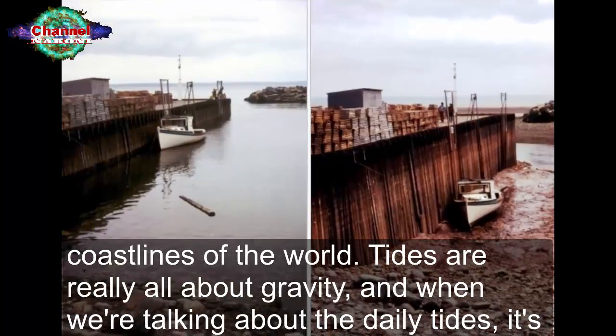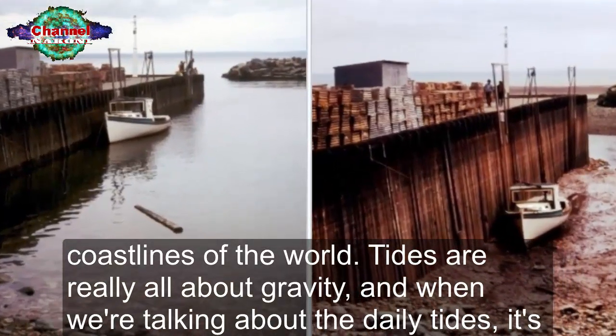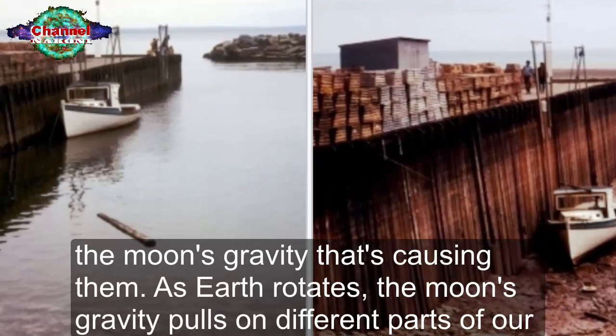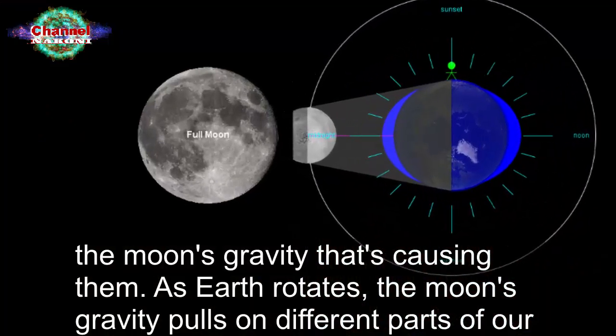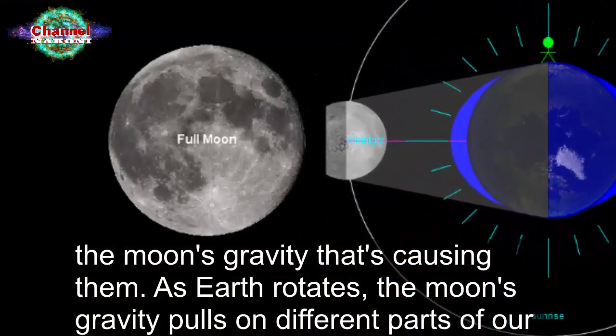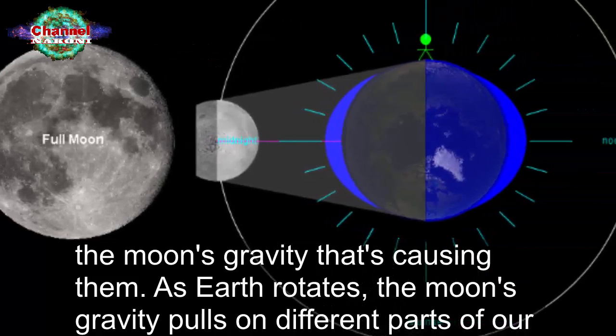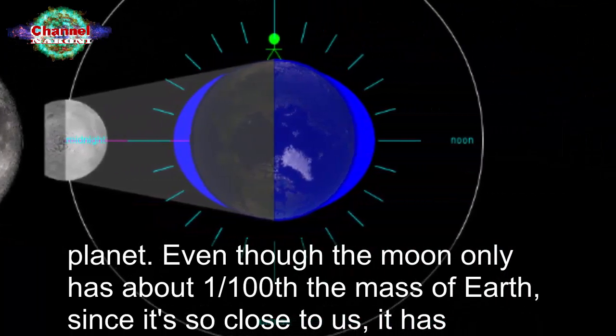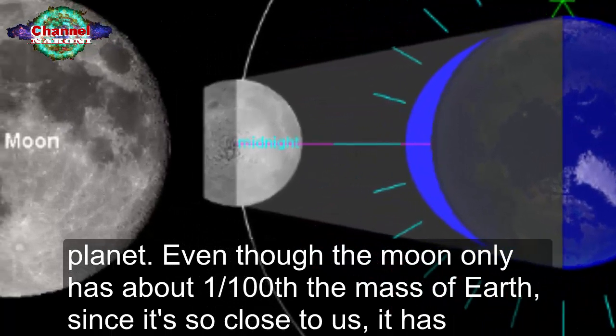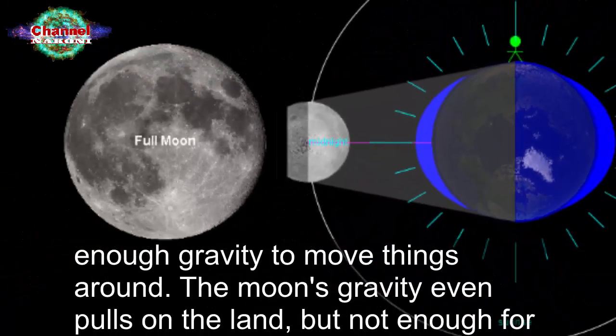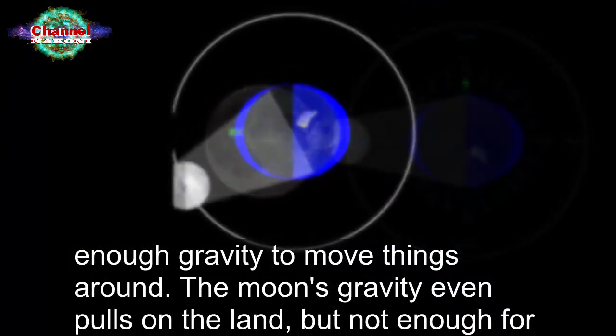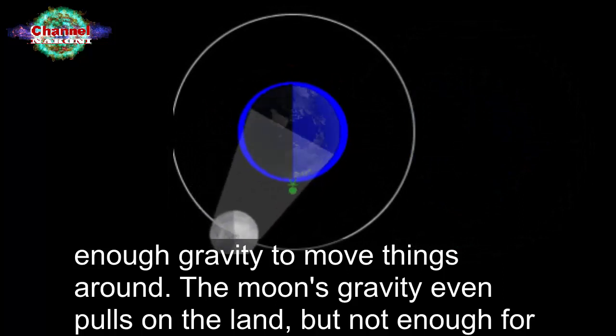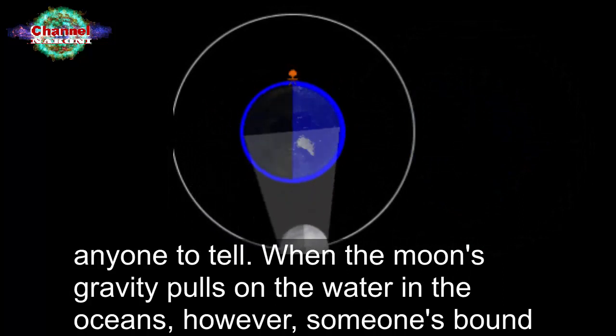Tides are really all about gravity, and when we're talking about the daily tides, it's the moon's gravity that's causing them. As earth rotates, the moon's gravity pulls on different parts of our planet. Even though the moon only has about one one-hundredth the mass of earth, since it's so close to us, it has enough gravity to move things around. The moon's gravity even pulls on the land, but not enough for anyone to tell.